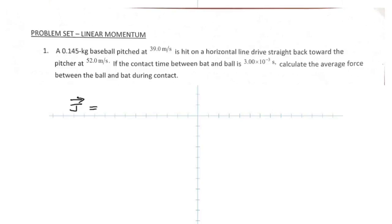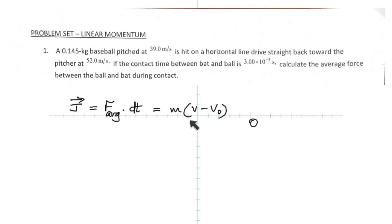Impulse can be defined in two ways: one, it's the product of average force and the time of action; and the other is it is the change in momentum. That is where the change in momentum comes in, because mass times velocity is momentum. So mass times final velocity, take away mass times initial velocity, is the change in momentum.